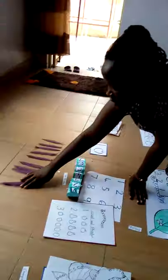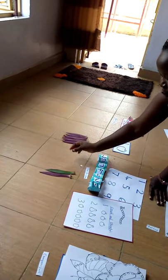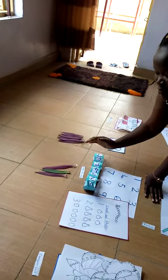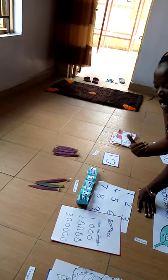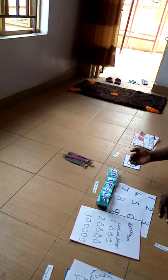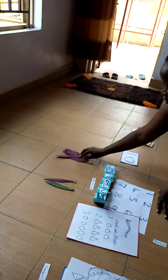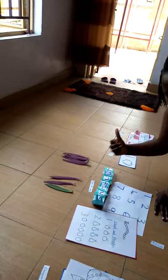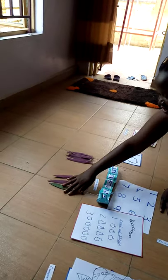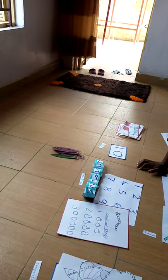One-to-one counting means the child picks one object at a time. When he does it very well he is becoming a rational counter. A rote counter is a child who has not achieved that stage — you'll find the child doing one, two-two, three, four, five, six, seven. But the child we've just seen is a rational counter because he was picking one object at a time.